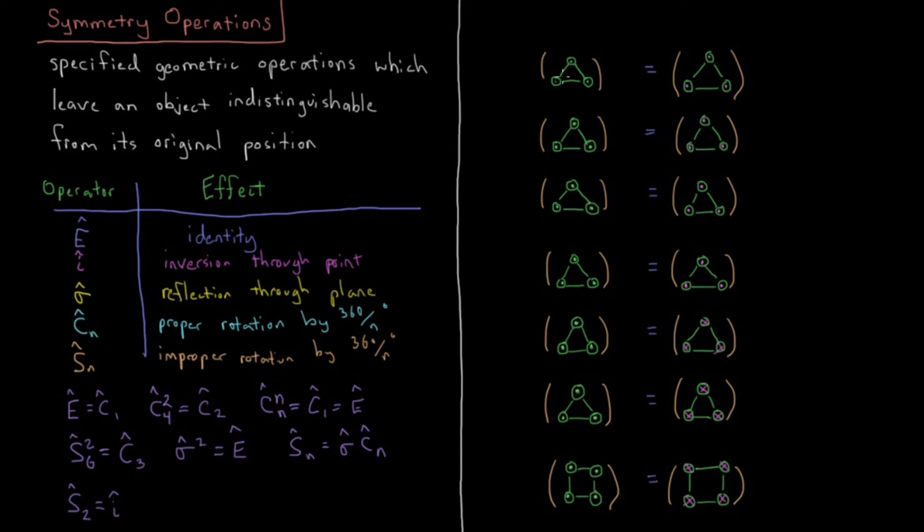So what about the effect of some of these on this triangle object I have here? So this is a triangle. The dots here indicate that they have arrows that are coming out of the plane towards us. So what about the effect of, we're going to have E, C3, C3 squared, sigma.